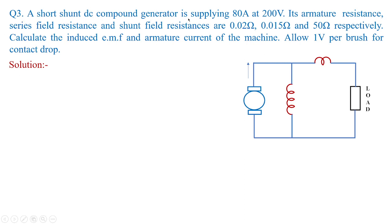Let us go with the third example. A short-shunt DC compound generator is supplying 80 amperes at 200 volts. Its armature resistance, series field resistance, and shunt field resistance are 0.02 ohms, 0.15 ohms, and 50 ohms respectively. Calculate the induced EMF and armature current, allowing 1 volt per brush for contact drop. In short-shunt, the shunt winding is connected in parallel with the armature only.